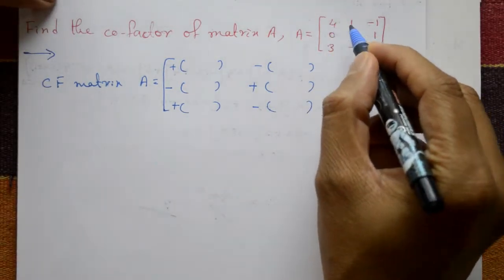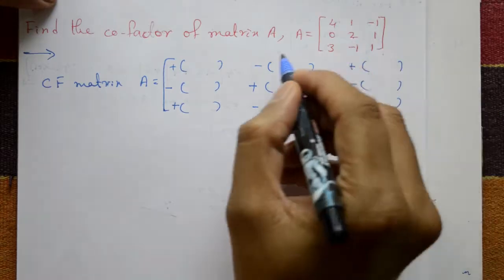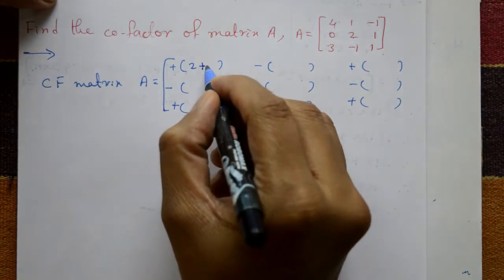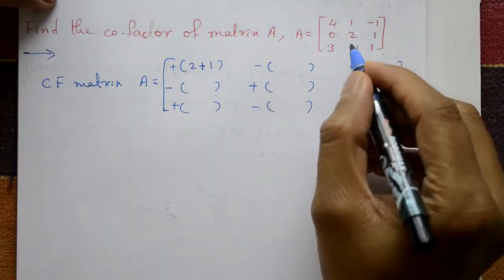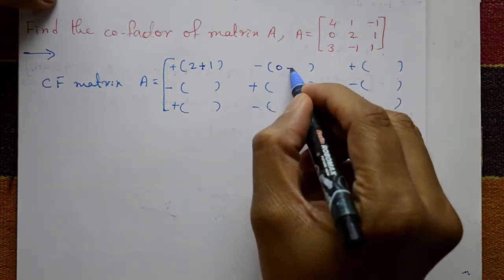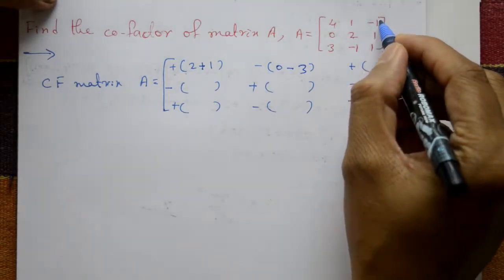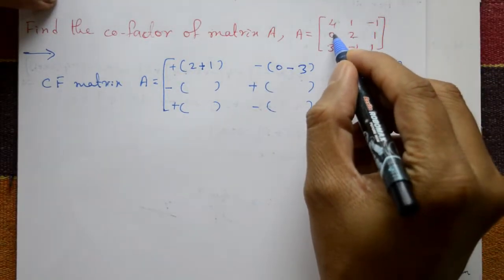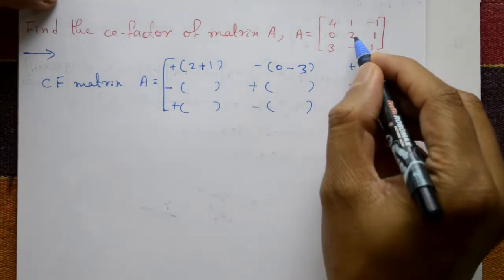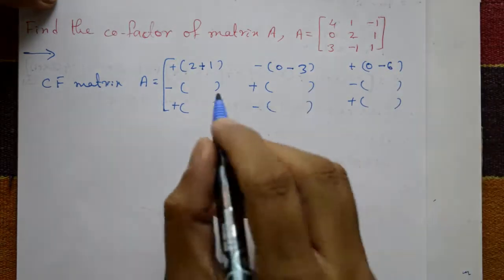Now take the first element — multiplication. 2 into 2 is 4, minus sign, minus 1 into 1 is minus 1, means plus 1. Take the second one: 1 into 0 into 1 is 0, minus sign, 3 into 1 is 3. Third one, minus: 0 into minus 1 is 0, minus sign, 2 into 3 into 2 is 6, so minus 6.